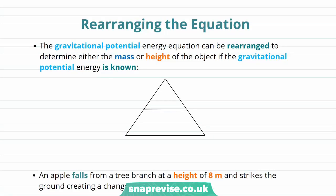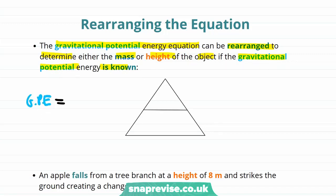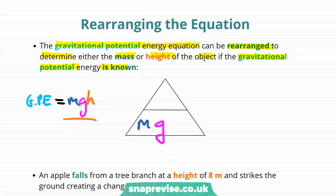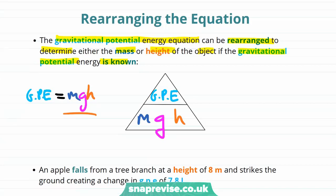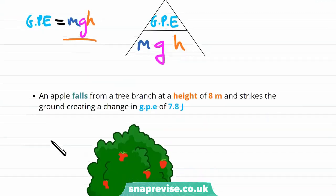Now let's try rearranging the equation. The gravitational potential energy equation can be rearranged to determine either the mass or height of the object if the gravitational potential energy is known. We use a formula triangle, with the product — mass times gravitational field strength times height — in the bottom, and gravitational potential energy at the top.